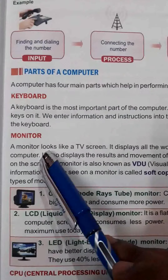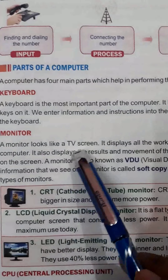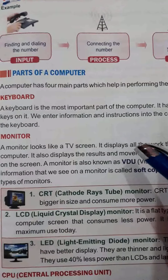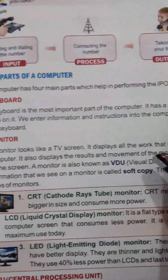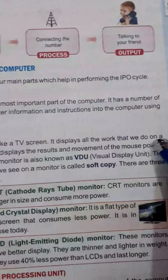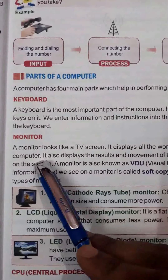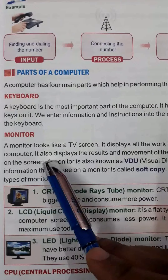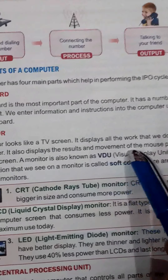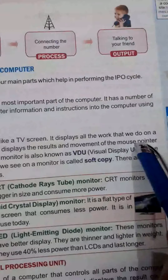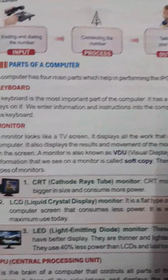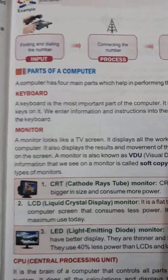The second part is the monitor. The monitor looks like a TV screen. It displays all the work that we do on a computer, and it also displays the result and the movement of the mouse pointer — all of that is shown on the screen.